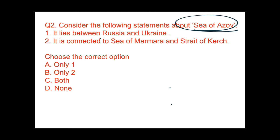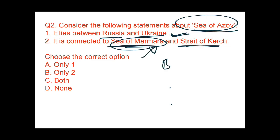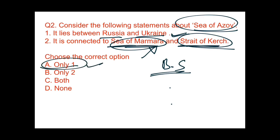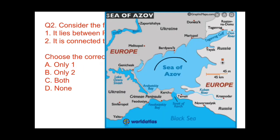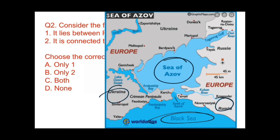Question 2: consider the following statements about the Sea of Azov. Statement 1 — it lies between Russia and Ukraine: correct. Statement 2 — it is connected to the Sea of Marmara by the Strait of Kerch: wrong, because it is connected to the Black Sea by the Strait of Kerch. So the answer is only Statement 1 (option A). On the map you can see the Sea of Azov lies between Ukraine and Russia, connected to the Black Sea by the Strait of Kerch.